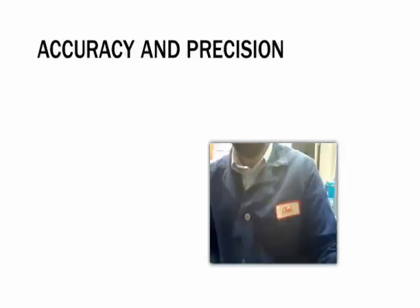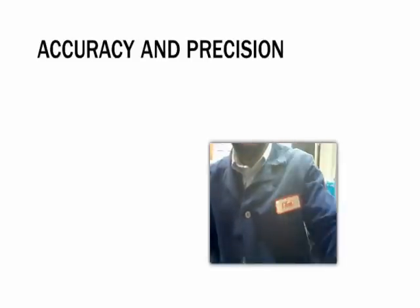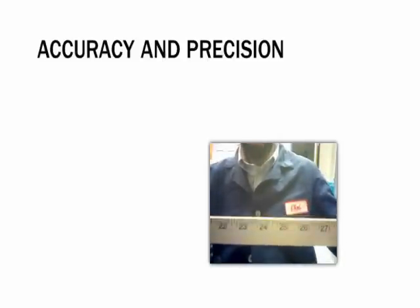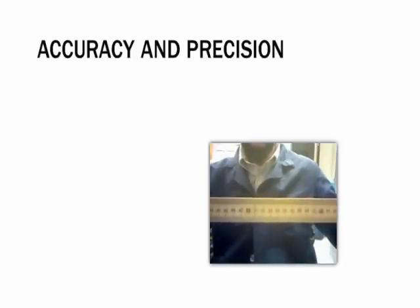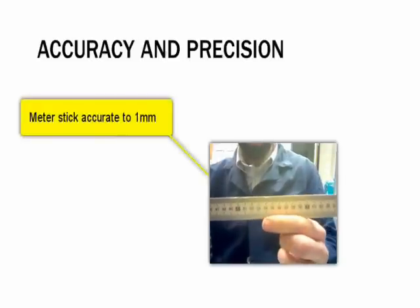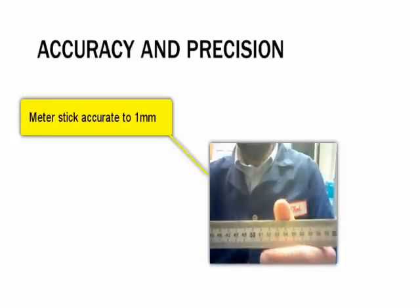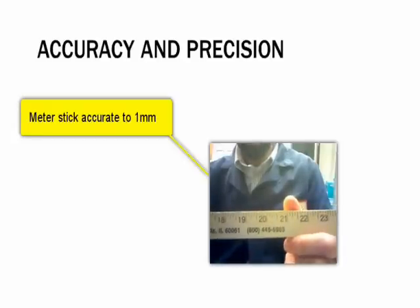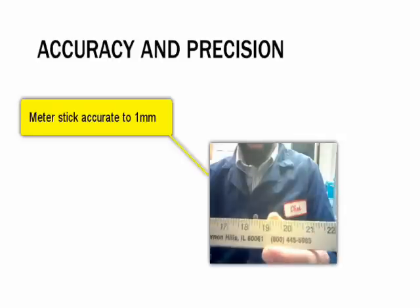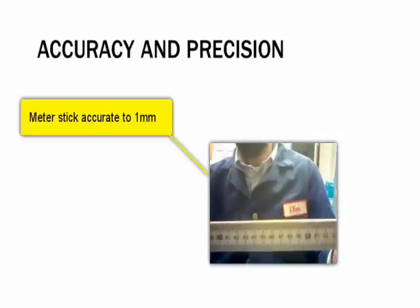Now, another example, we have a metric ruler here, okay, and this is accurate, this meter stick is accurate to the millimeter, and this is actually much more accurate than your customary English system. You don't have as much accuracy with this, you have much, many more lines here, shows you much more accuracy.